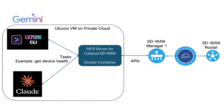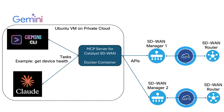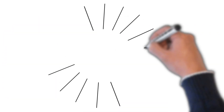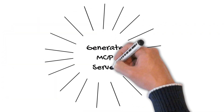The MCP server will translate the tasks to API calls and retrieve needed information from the SD-WAN network. If needed, the procedure can be repeated for the next SD-WAN overlay. Okay, let's get into details.